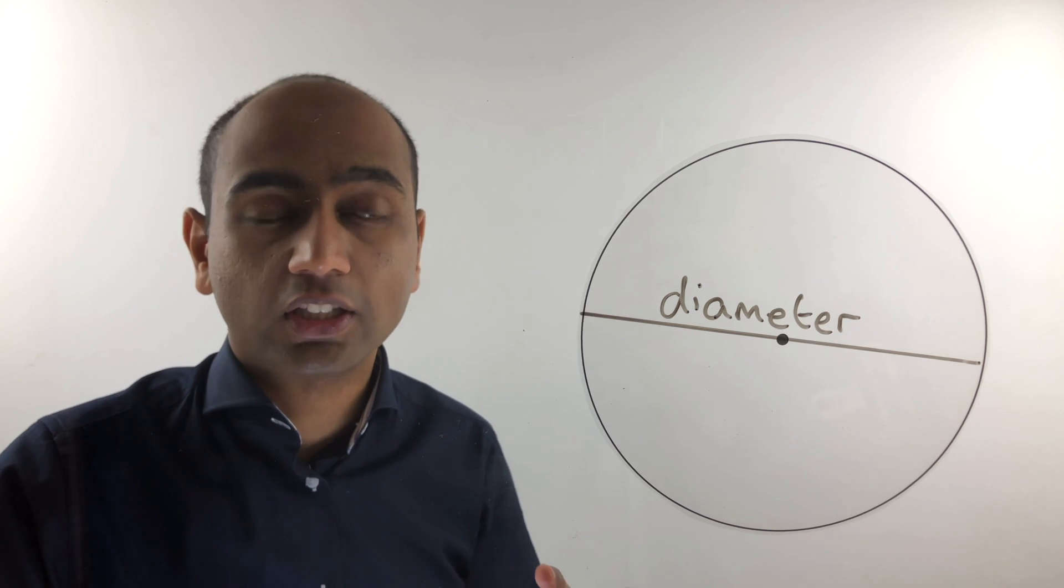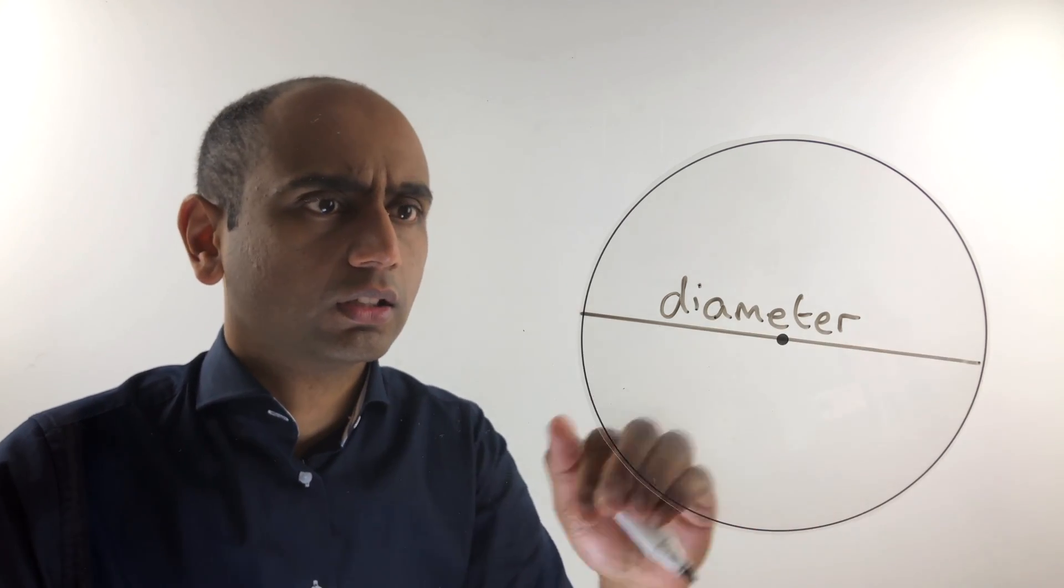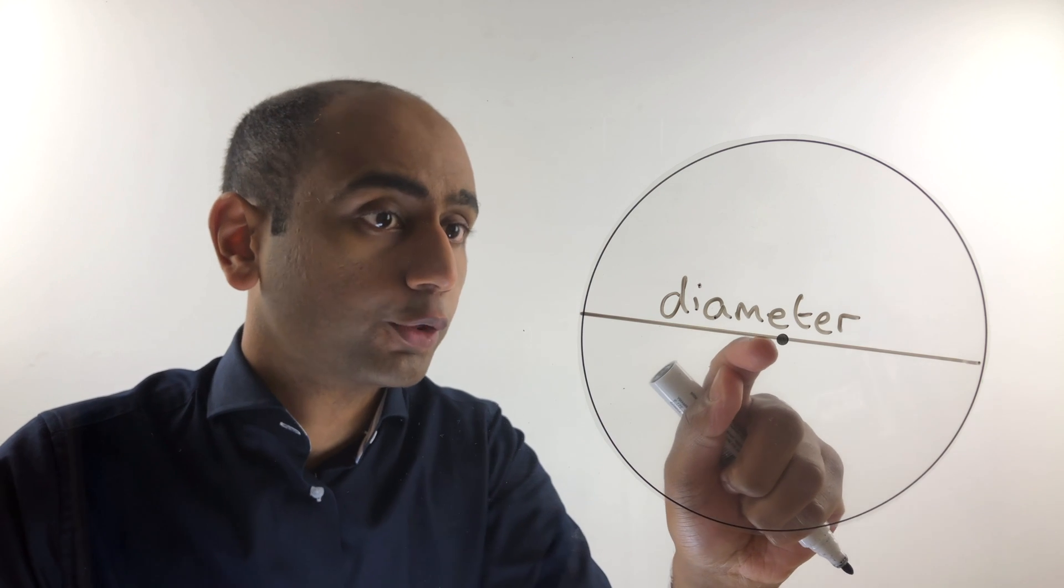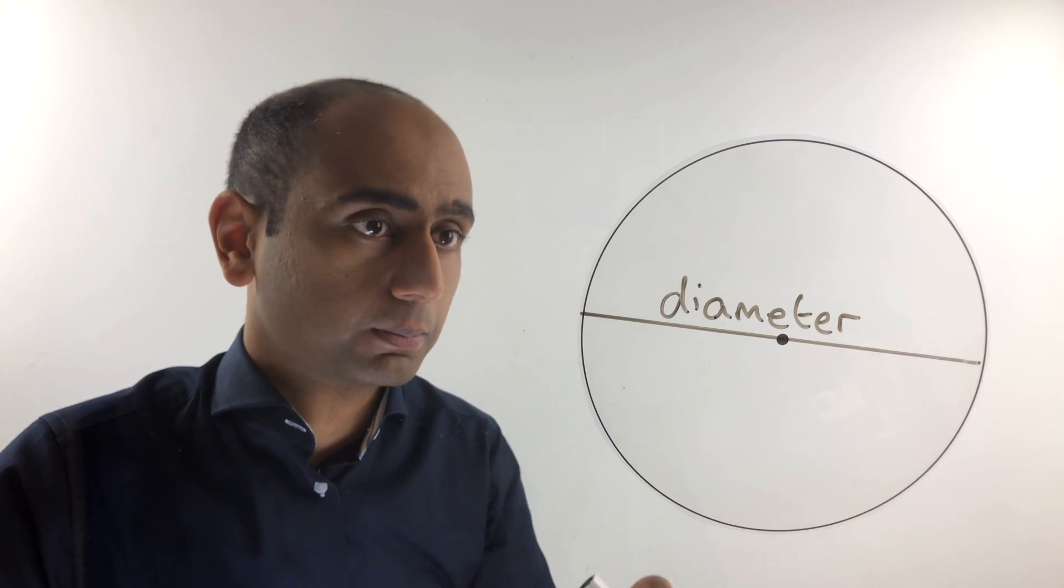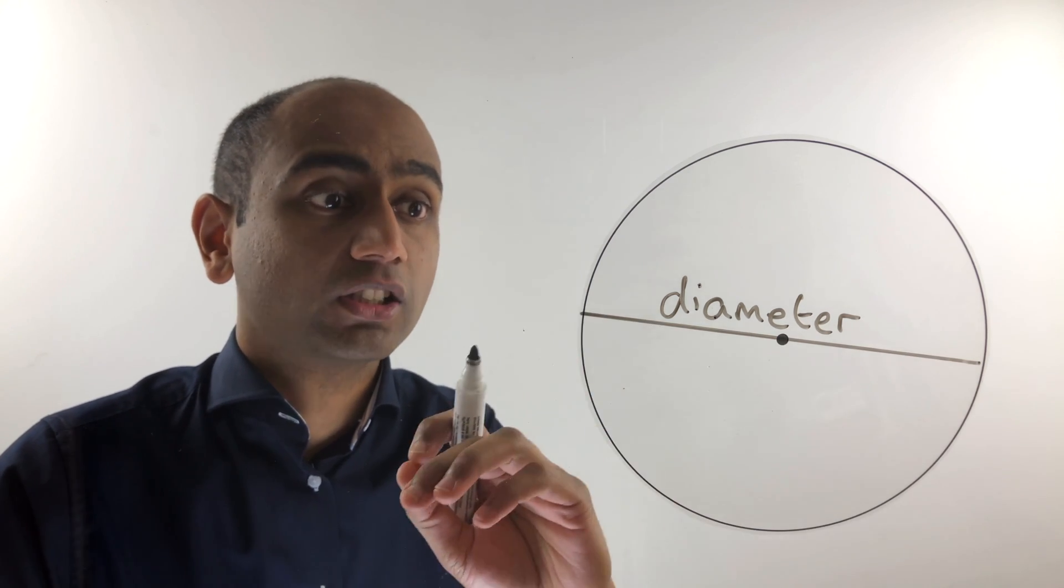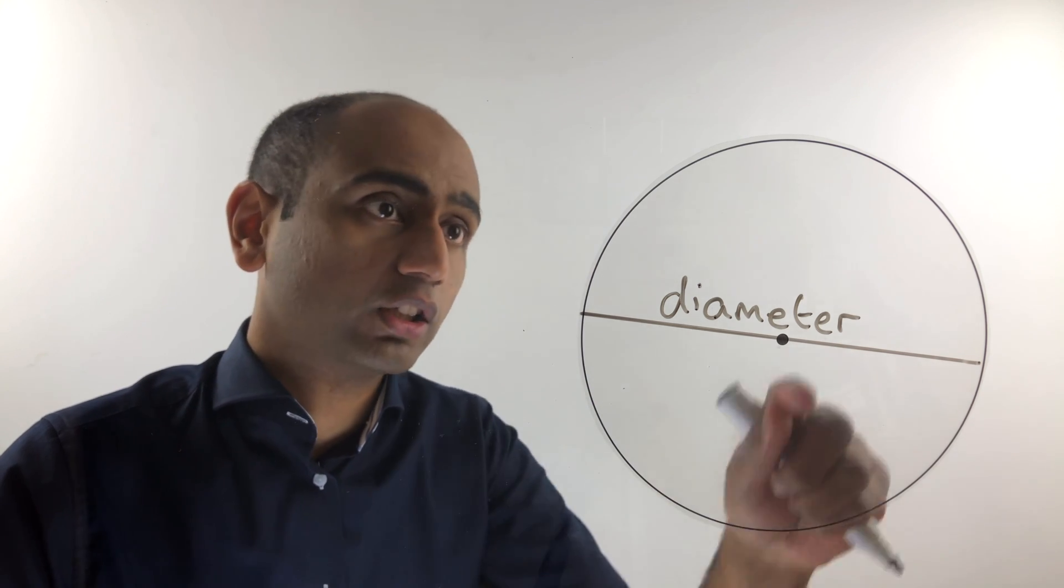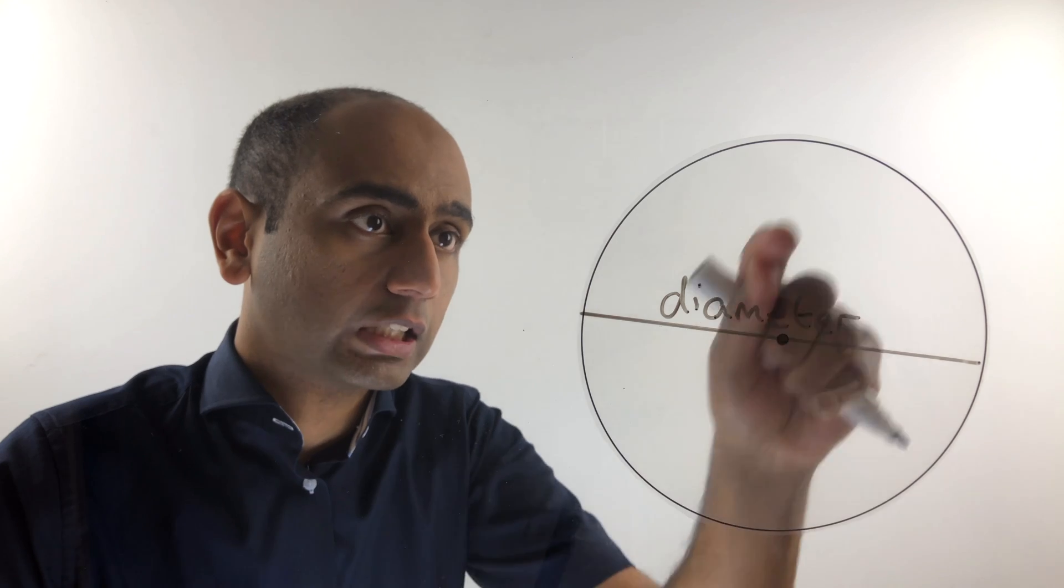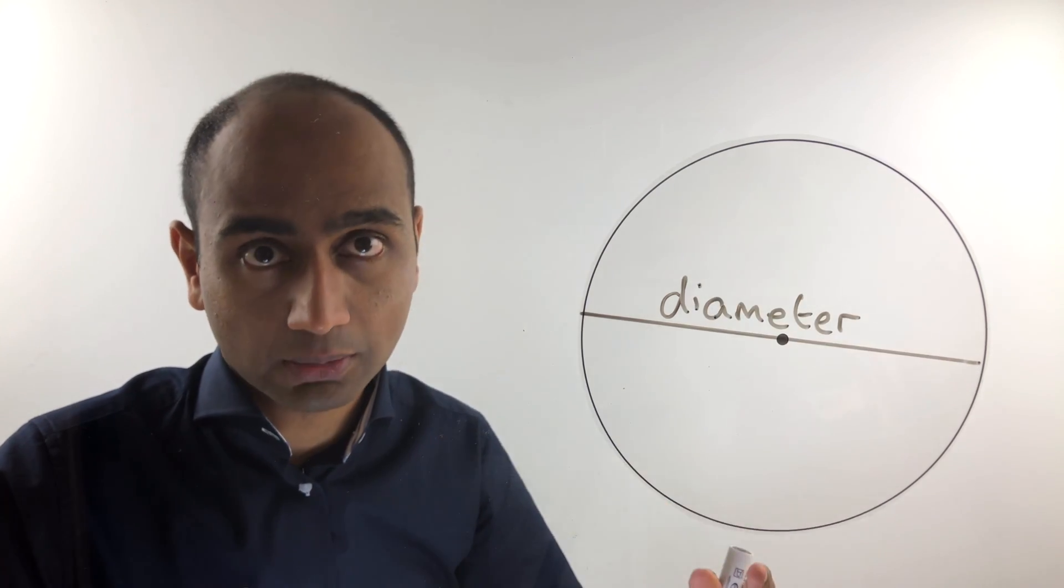The second key word we're going to look at is diameter. A diameter is a straight line going from the edge of the circle through the centre to the edge again. Like with the radius, the diameter can go in any direction. I could have started up here, gone through the centre, and finished down here and got a diameter like that, for example.